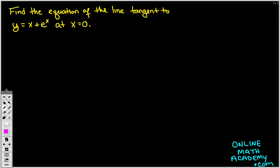Hey everyone, and welcome to another video from OnlineMathAcademy.com. Today we're looking at this problem, which is a Calculus 1 problem, and it's a very traditional Calculus 1 problem, and one that every Calc 1 student should be able to solve. This encompasses a lot of the early topics in Calculus 1. And the question asks us to find the equation of the line tangent to y equals x plus e to the x at x equals 0.